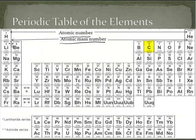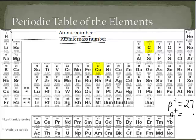Now you should be able to look at the periodic table and choose any element and tell me the number of protons, neutrons, and electrons. Let's try cobalt. Go ahead and pause the recording and determine how many protons, neutrons, and electrons cobalt has. The atomic number is twenty-seven, so the number of protons is also twenty-seven. The atomic mass number is fifty-nine, so the number of neutrons is fifty-nine minus twenty-seven, which equals thirty-two. And the number of electrons, because it's a neutral atom, is also twenty-seven.